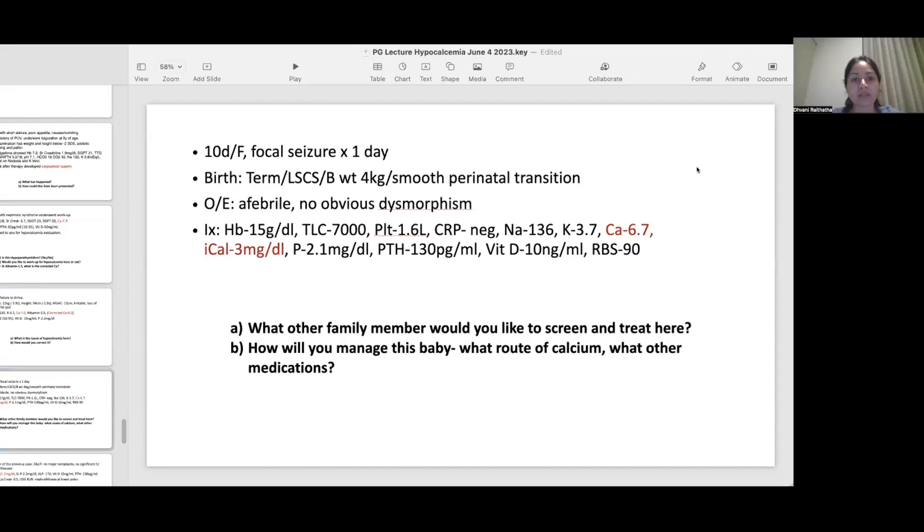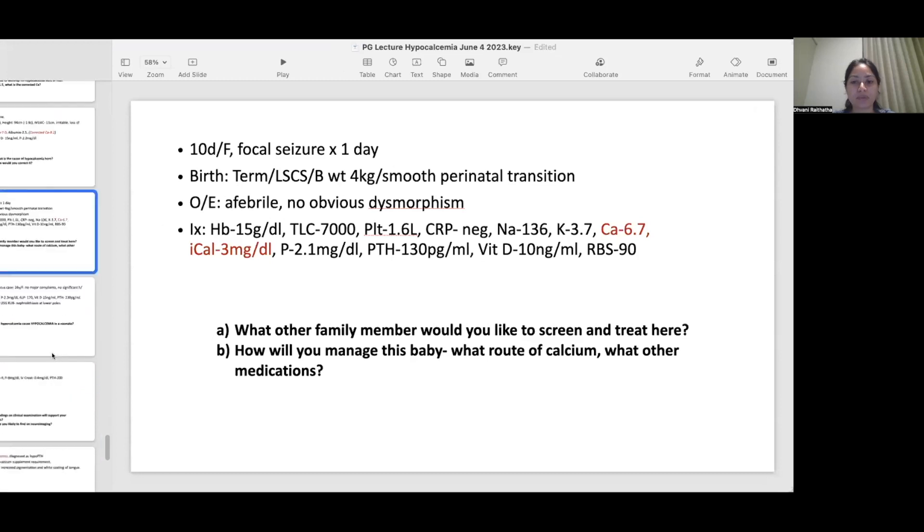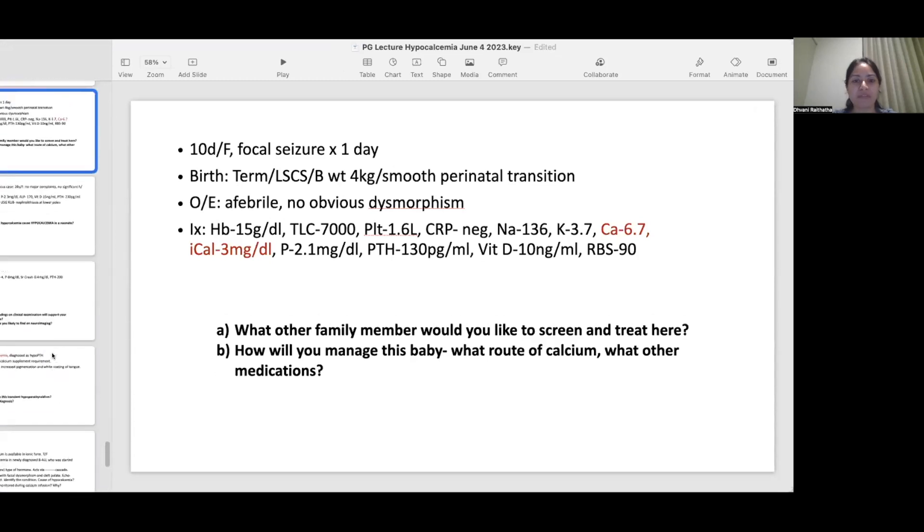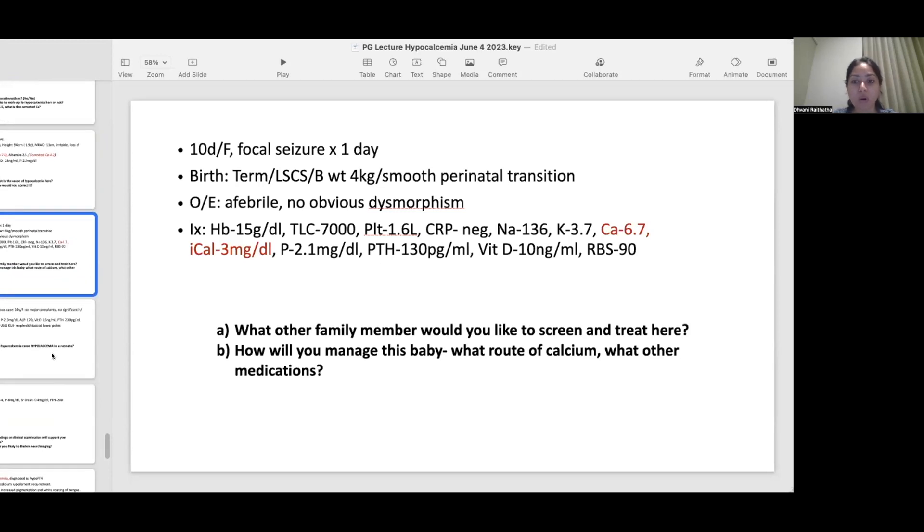Next case: a 10-day-old girl with focal seizures for one day. She was born term by LSCS, birth weight was normal 4 kg. On examination she was not febrile, she had no obvious dysmorphism. On investigation the sepsis screen was negative, calcium was very low at 6.7 with an ionized calcium of 3 mg/dL, PTH level was 130, vitamin D levels were low. Sugars were confirmed to be in the normal range. In the setting of this child with hypocalcemia, what family member would you like to screen here and how will you manage this hypocalcemia? What route of calcium will you use?